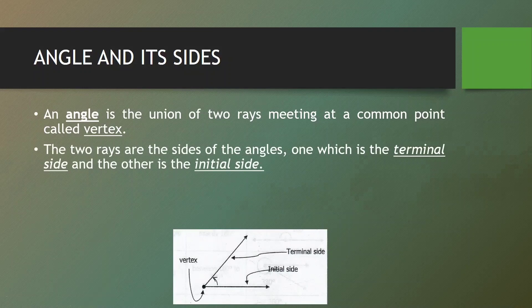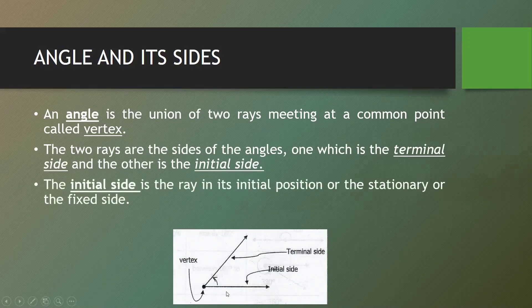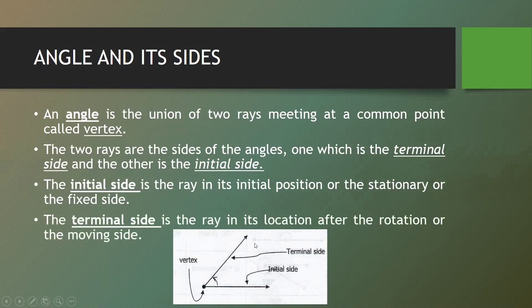Two rays are the sides of the angle — one is the terminal side and the other is the initial side. The initial side is the ray in its initial position, or the stationary fixed side, while the terminal side is the ray in its location after rotation, or the moving side. The initial side is always in horizontal position, and as we measure the angle from the initial side, it goes to the terminal side, which is the ending ray.